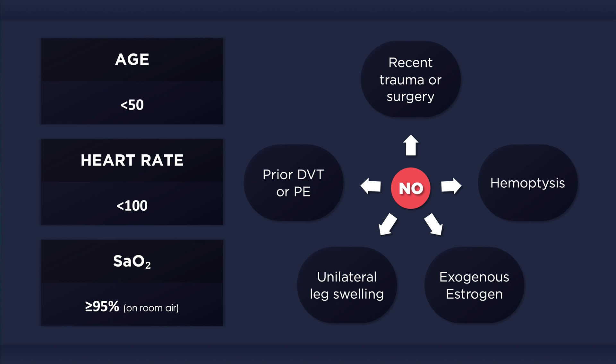Further testing may be necessary if one or more of these criteria are not met, and when a patient has an intermediate or high pre-test probability of pulmonary embolism, thus prohibiting the use of the PERC clinical decision rule.